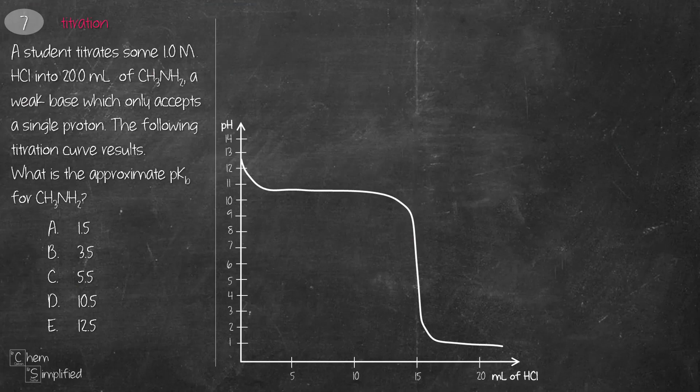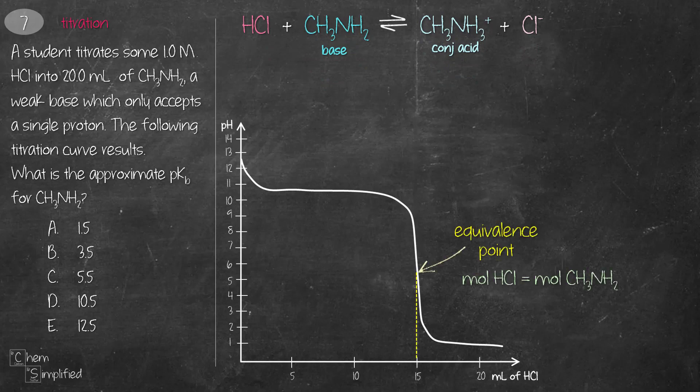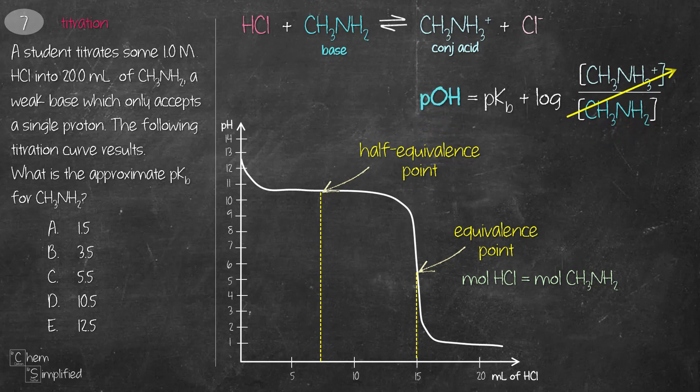This is the same titration curve, showing the titration between HCl and the weak base CH3NH2. At equivalent point, after adding 15 ml of HCl, the mole of acid is exactly the same as the mole of the base. And at half equivalent point, which is 7.5 ml, that's where exactly half of the base has reacted with HCl. And what that means is that we have an equal amount of conjugate acid, which is CH3NH3+, and base, which is CH3NH2.